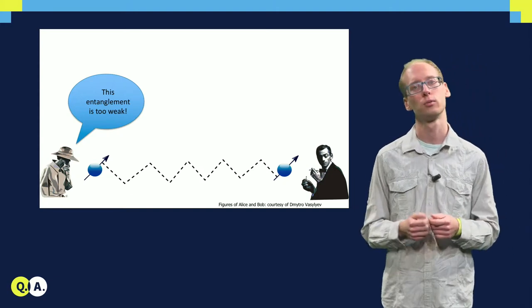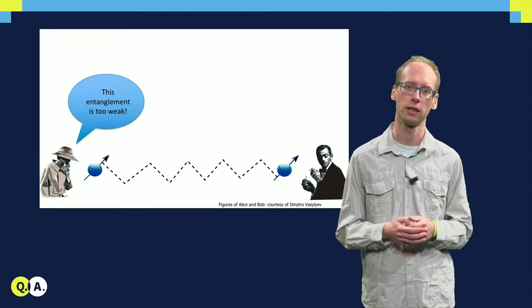For example, too weak correlations would not allow Alice and Bob to generate any shared secret key.